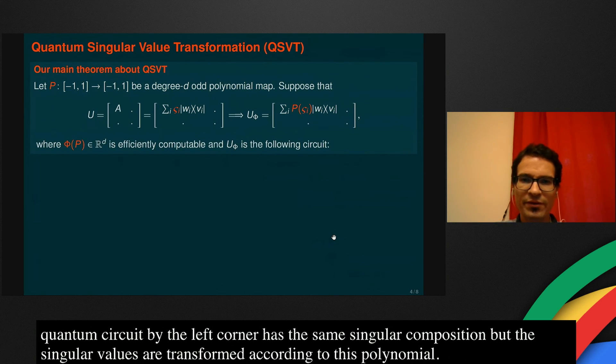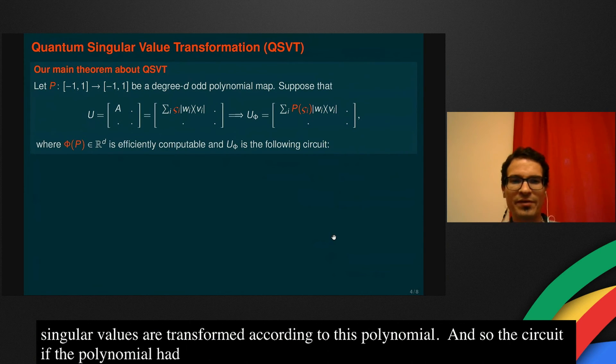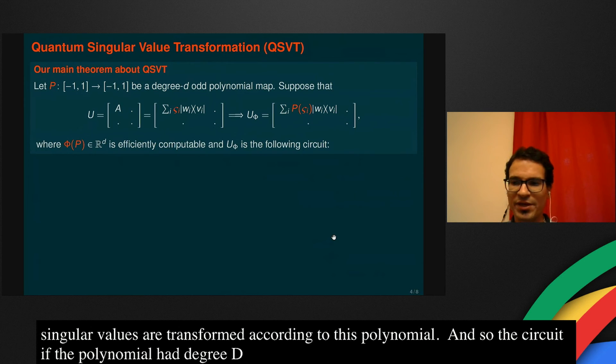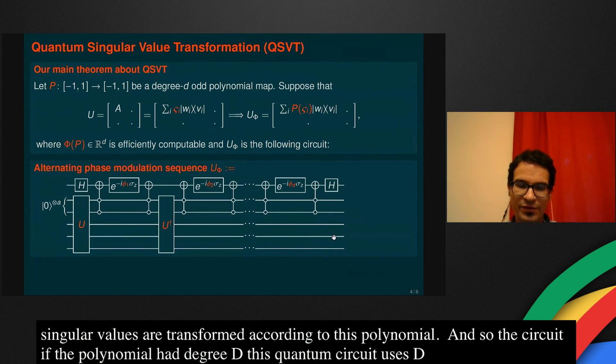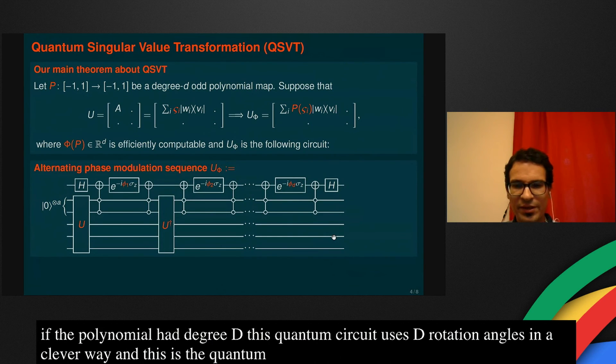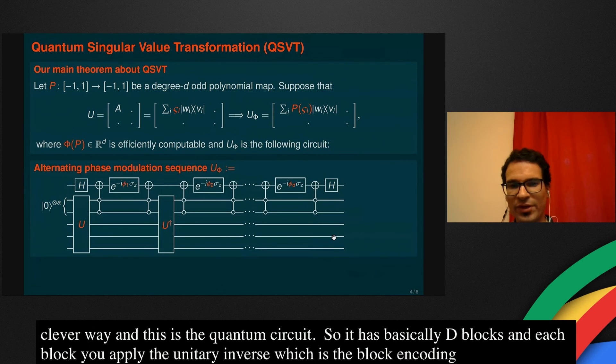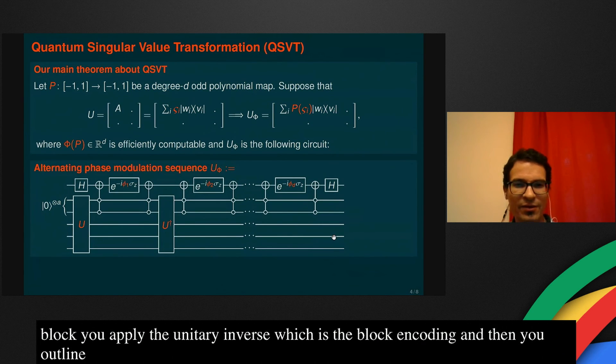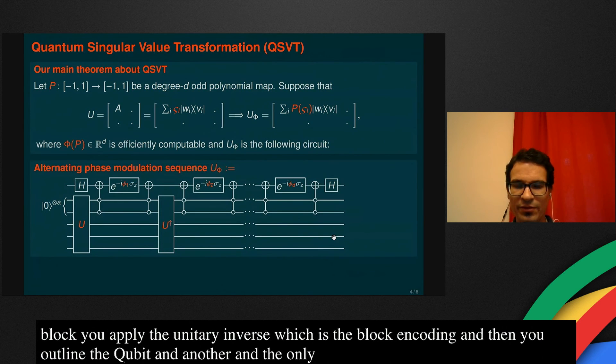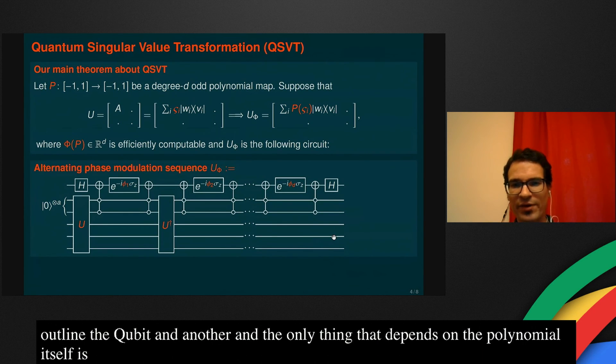This circuit, if the polynomial had degree d, then this quantum circuit essentially uses d rotation angles in a clever way. And this is the quantum circuit. It has basically d blocks, and in each block you apply the unitary and its inverse, which is the block encoding. And then you apply in each block a Toffoli gate, then a rotation on a single qubit, and then another Toffoli gate. And the only thing that depends on the polynomial itself is this angle sequence, phi 1 to phi d, which is acting on this single qubit.